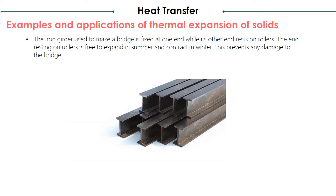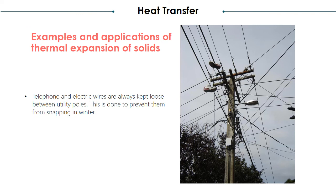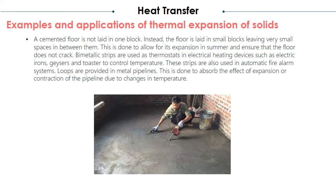The iron girder used to make a bridge is fixed at one end while its other end rests on rollers. The end resting on rollers is free to expand in summer and contract in winter, preventing any damage to the bridge. Telephone and electric wires are always kept loose between utility poles to prevent them from snapping in winter. A cemented floor is laid in small blocks with very small spaces in between, to allow for expansion in summer and ensure the floor does not crack.